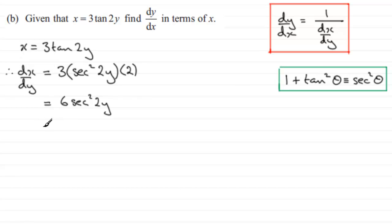So we've got 6 multiplied by 1 plus tan squared 2y. Now what I want to do is pick up on this part here. I can see that from here, tan 2y must be equal to x divided by 3. So I can put that in here.